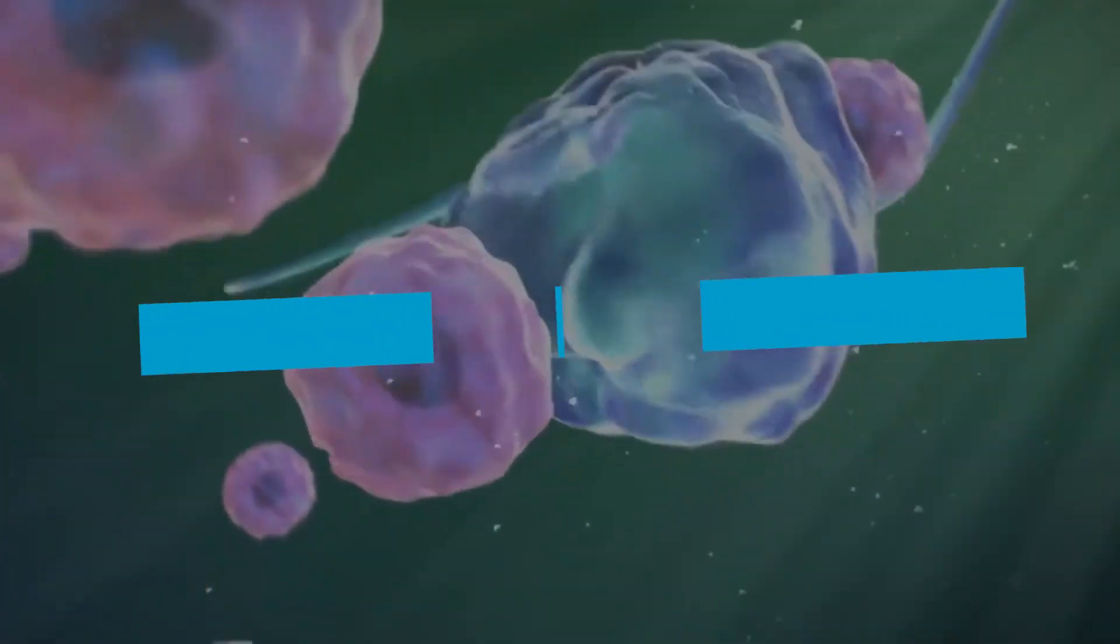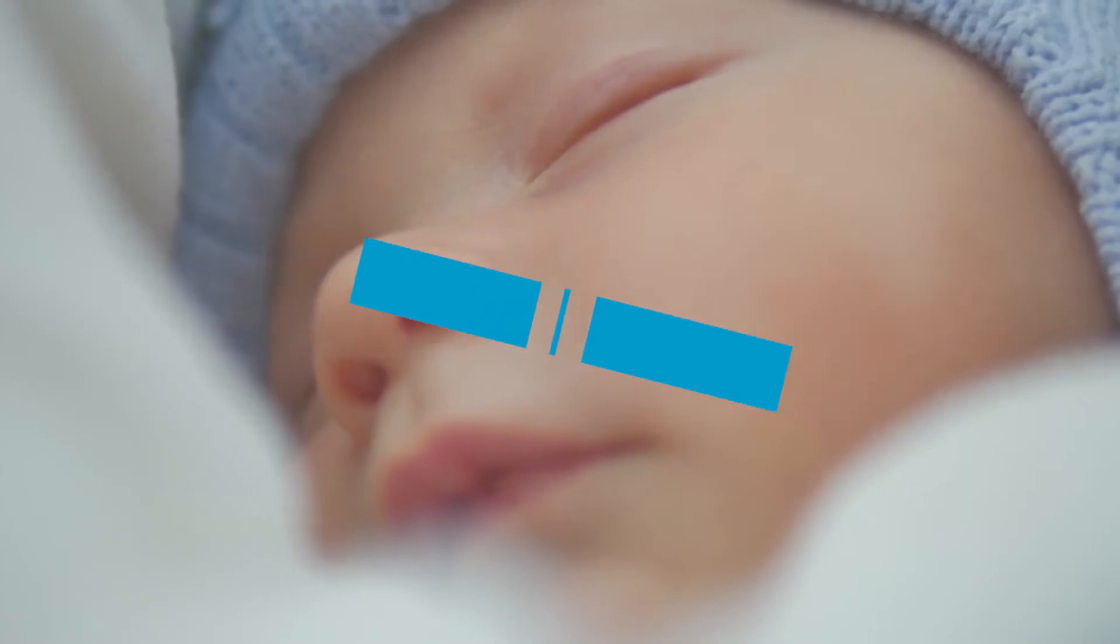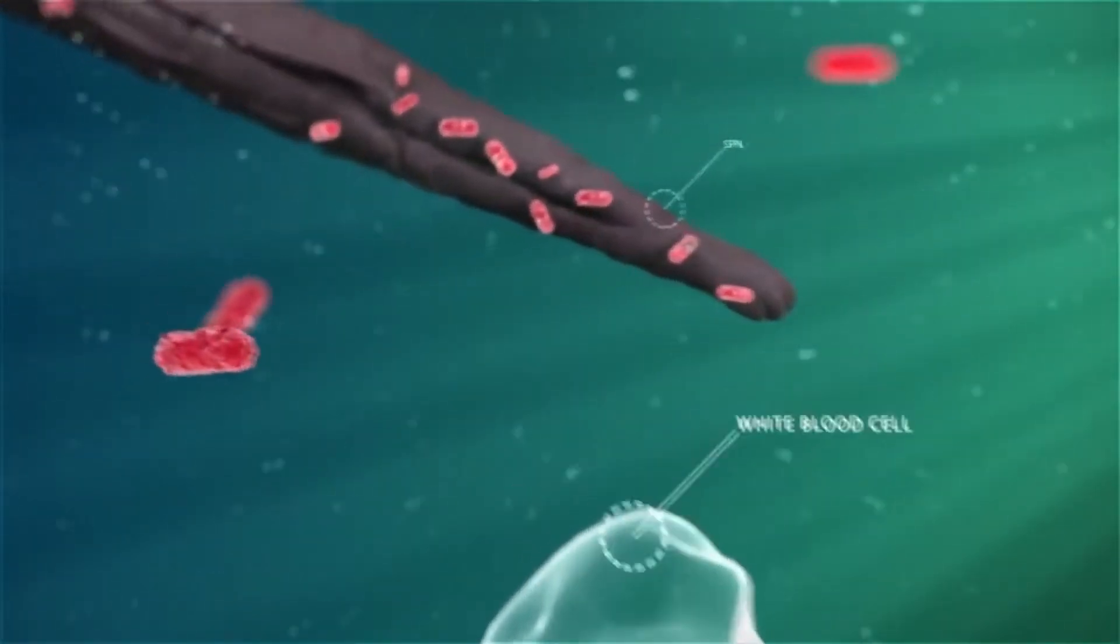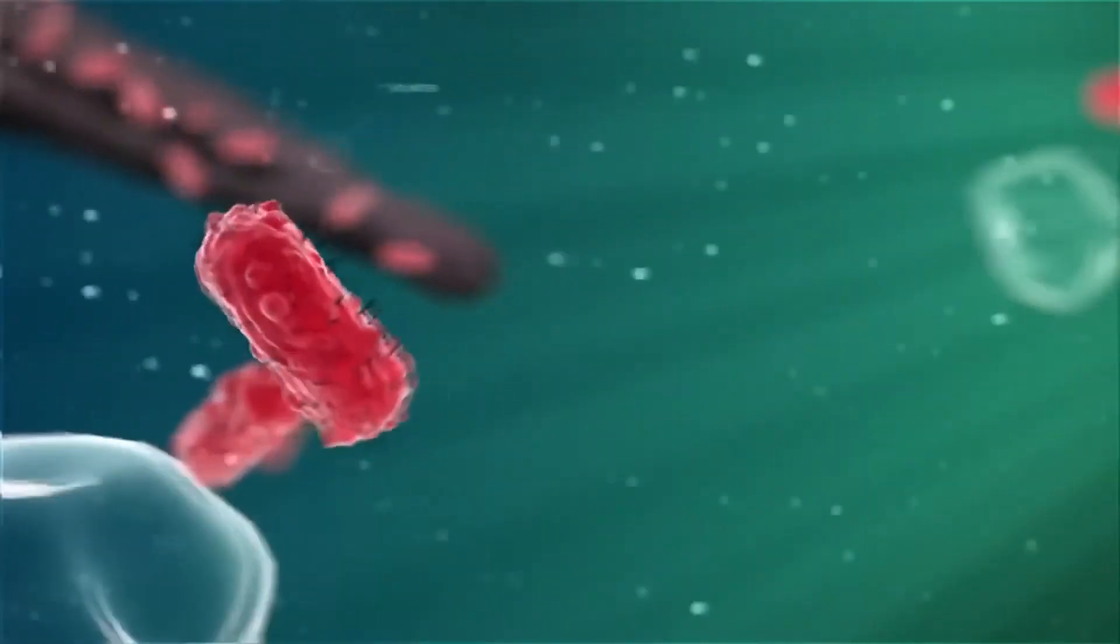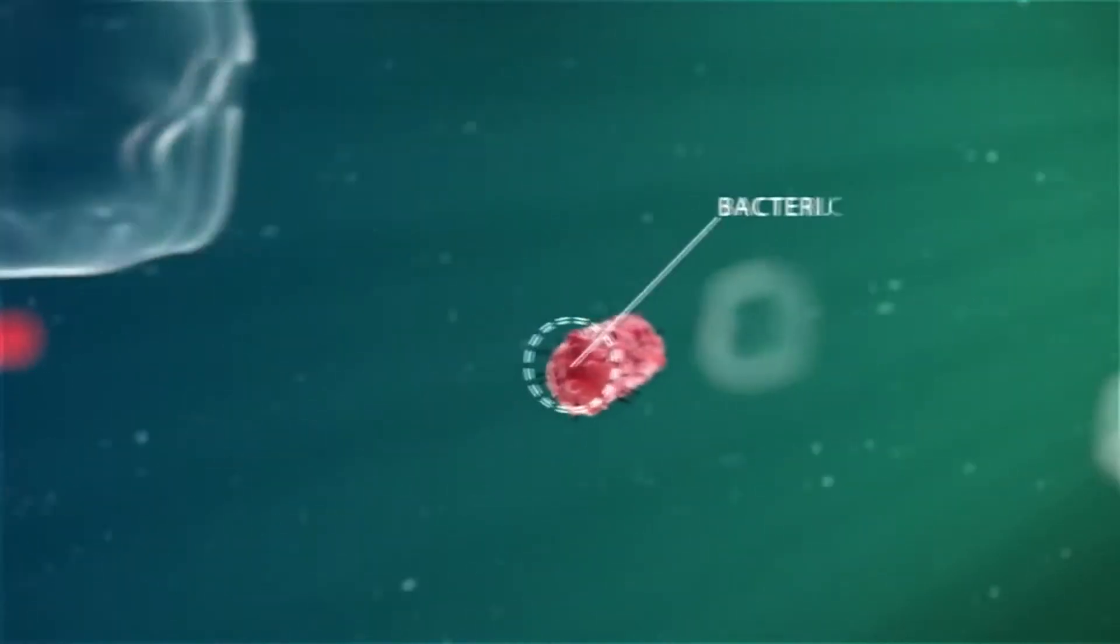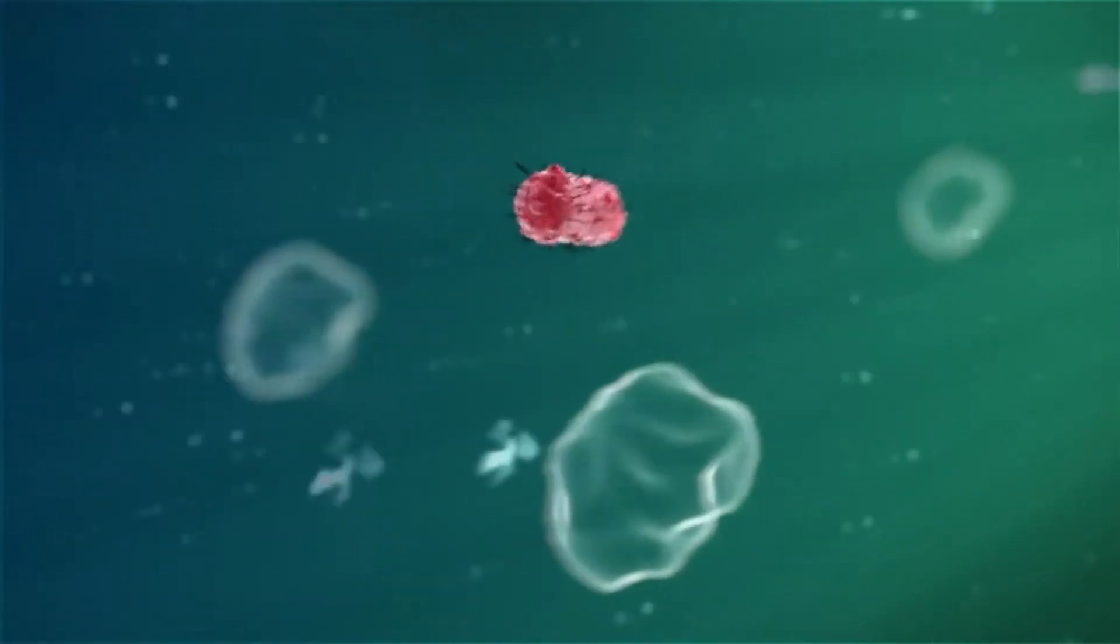There are two main parts of the immune system. The innate immune system which you are born with. The innate immune system is the first line of defense. It patrols your body and is the first to respond when it finds an invader and is particularly important in warding off bacterial and viral infections.